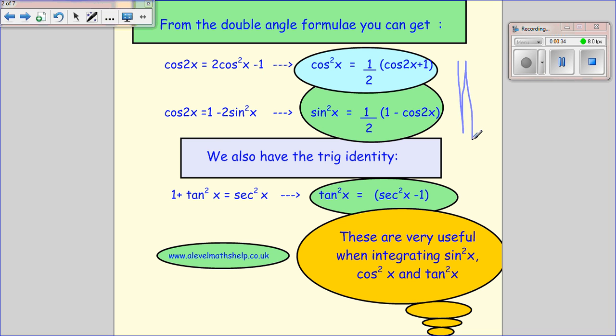You also have the trig identity 1 plus tan squared x equals sec squared x, which rearranges to tan squared x equals sec squared x minus 1. These are very useful in helping us integrate powers of sin squared x, cos squared x, and tan squared x.